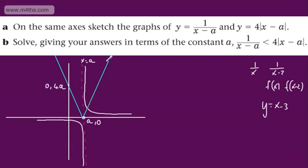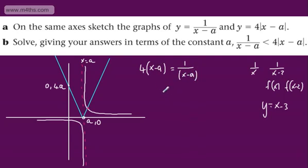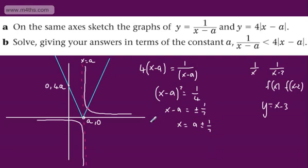At the point of intersection the modulus function is clearly above the reciprocal beyond that point. Taking the positive modulus branch: 4(x - a) = 1/(x - a). Multiplying both sides by (x - a) and dividing by 4, we get (x - a)² = 1/4. Taking the square root: x - a = ±1/2, so x = a ± 1/2. The relevant intersection to the right of x = a is x = a + 1/2.